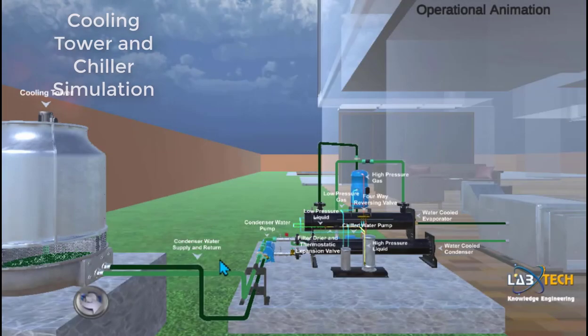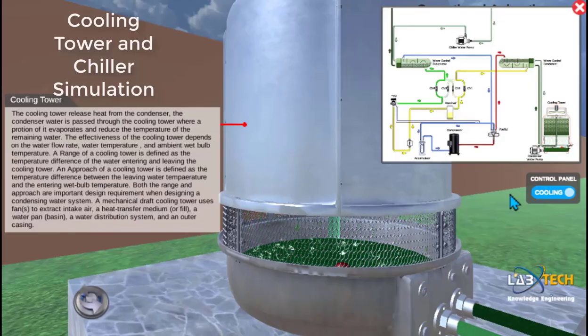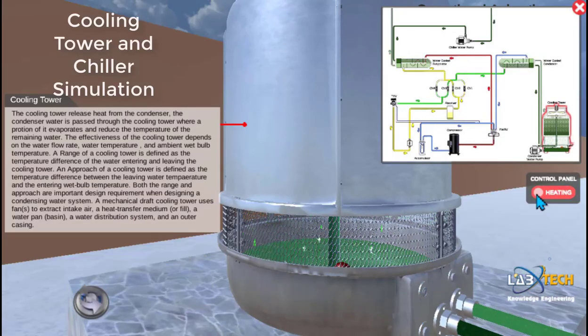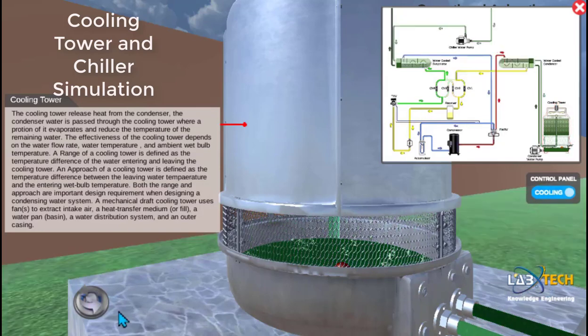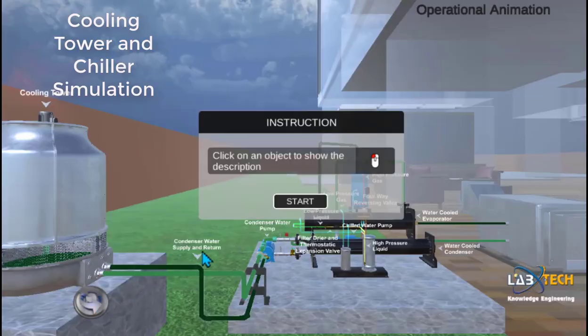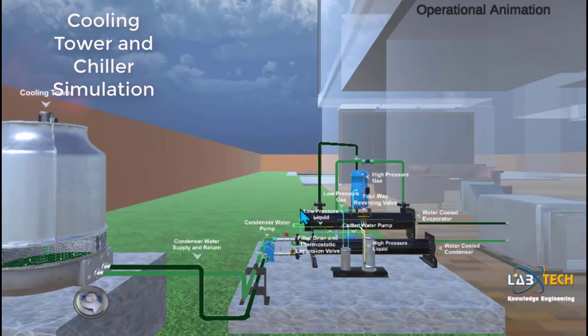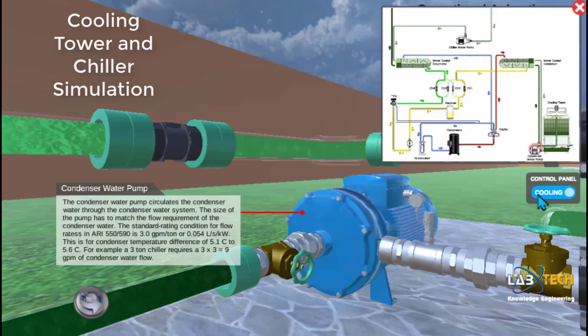This is from our HVAC series, where we are looking at a simulation for cooling tower and chiller units. The interesting thing about this one is it's a reverse cycle. So we can look at both the heating and the cooling modes.